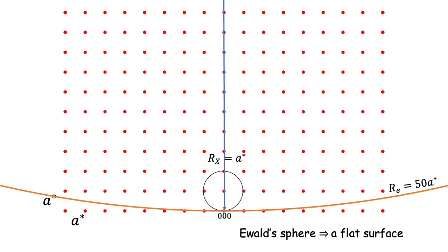So in the case of an electron beam, the part of Ewald's sphere close to the origin can be treated as a flat plane perpendicular to the electron beam.